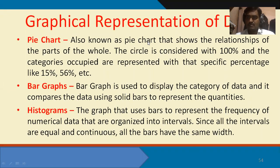This tells us that overall in 360 degrees — which we call 100 percent — the entire circle, if it is 100 percent, which portion belongs to which category and what percentage.